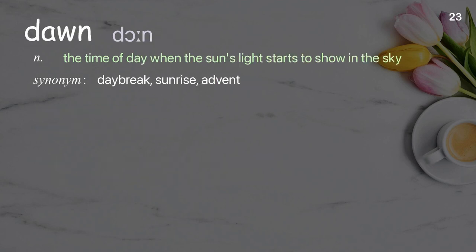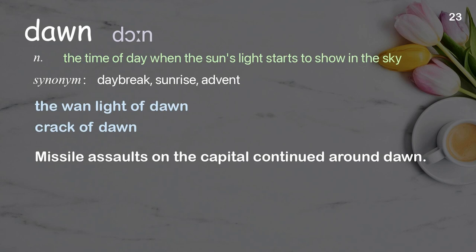Dawn. The time of day when the sun's light starts to show in the sky. Examples: the wan light of dawn, crack of dawn. Missile assaults on the capital continued around dawn.